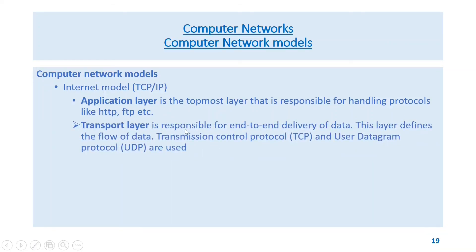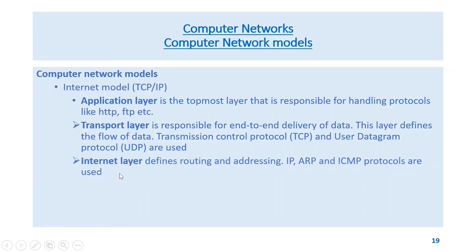The transport layer is responsible for end-to-end delivery of data and defines the flow of data. Transmission Control Protocol (TCP) and User Datagram Protocol (UDP) are used. The internet layer defines routing and addressing. IP, ARP, and ICMP protocols are used.